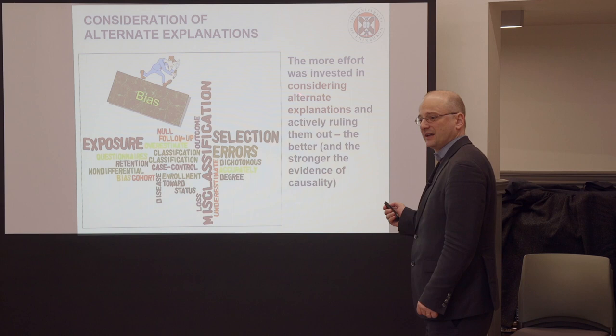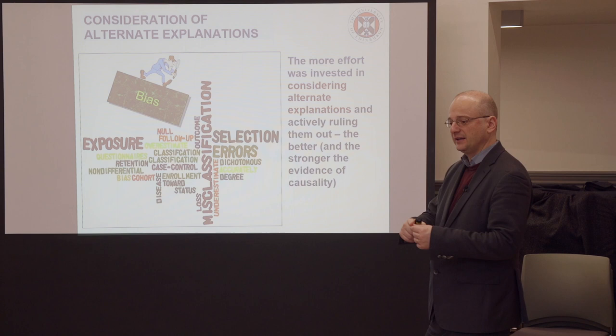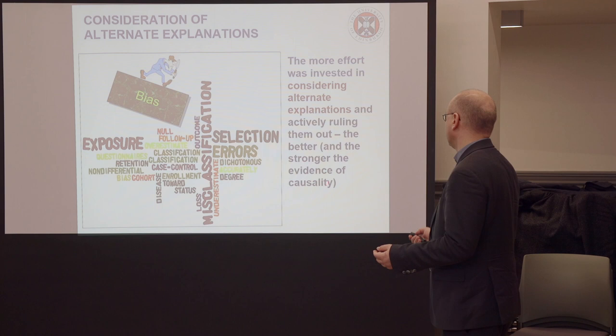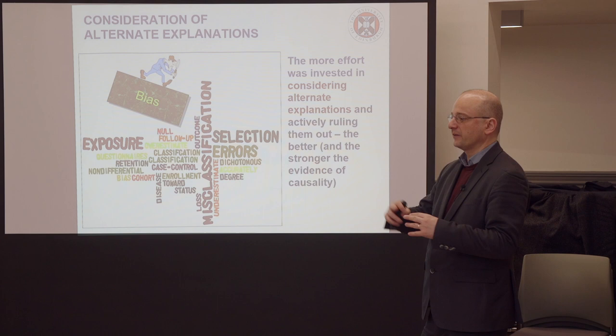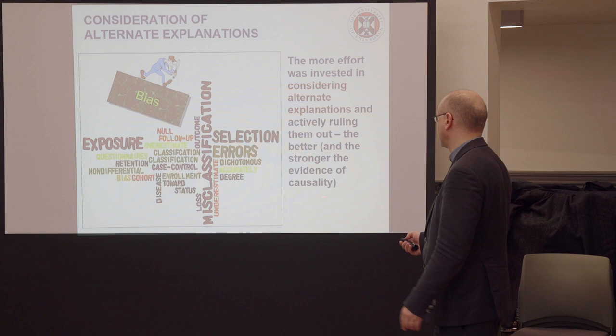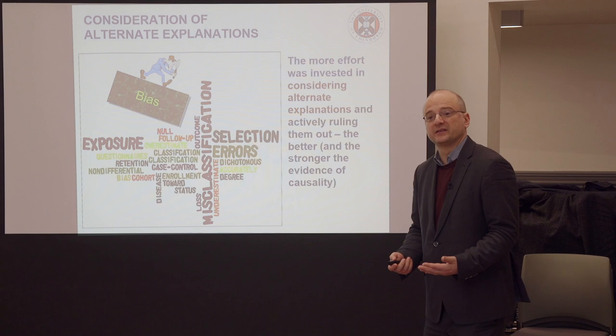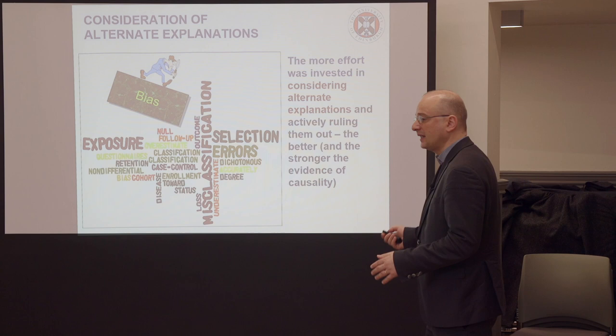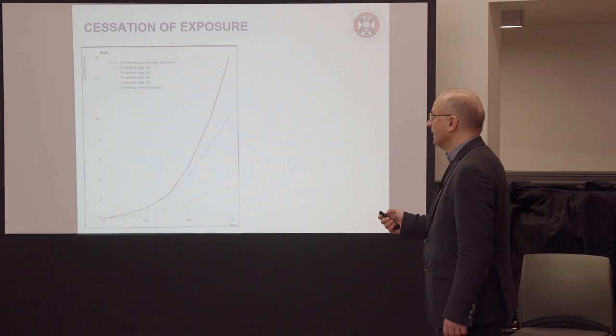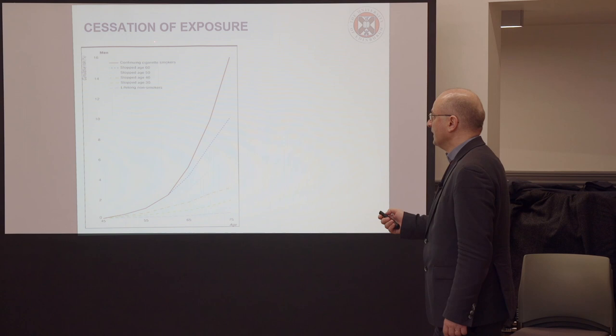Consideration of alternative explanations — it's always good to invest effort in thinking of all other reasons why you found a correlation between the risk factor and the disease, and then actively try to rule those out. The more effort you invest in this, the more you will be respected as a researcher, the better your discussion section, and the more likely your paper is to get published. However, you can never think of all possible explanations and rule them all out.